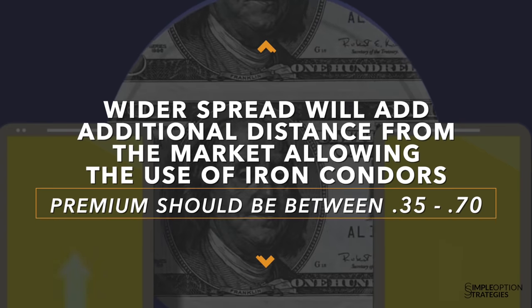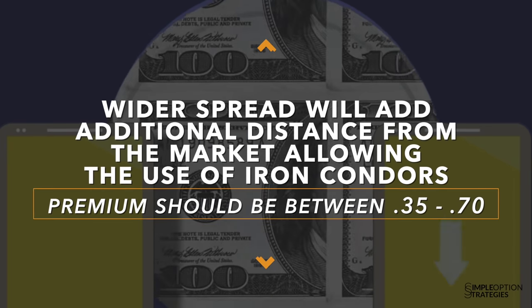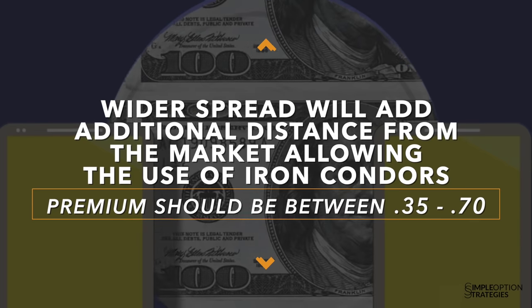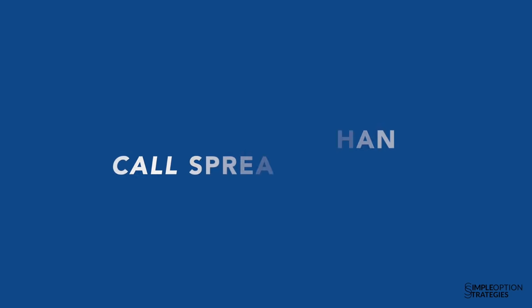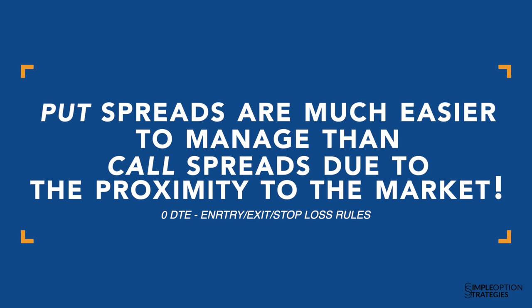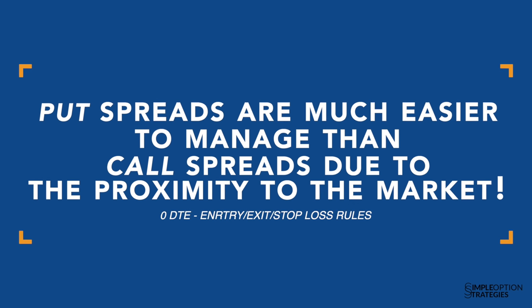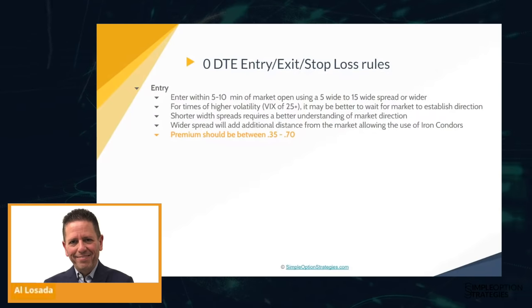A wider spread with additional distance allows you to better trade an iron condor rather than just one side. Premium should be between $0.35 and $0.70 — I usually get in around $0.45 to $0.50. There's a difference between call and put credit spreads: you'll get greater distance for put credit spreads than call spreads, especially in a bull market. Call spreads will be closer to the market because of how premium spreads are structured.